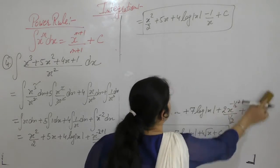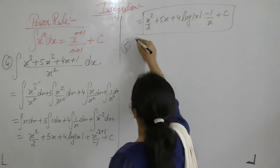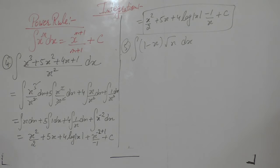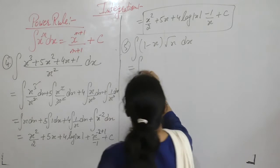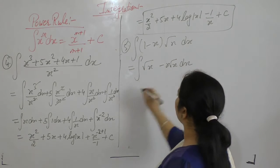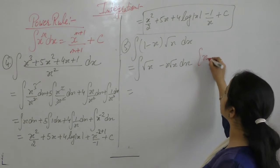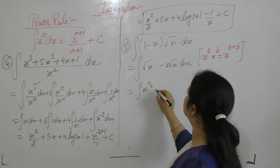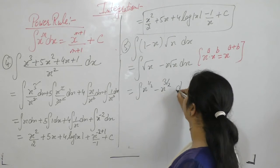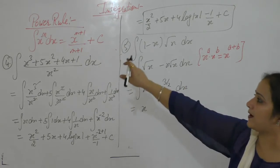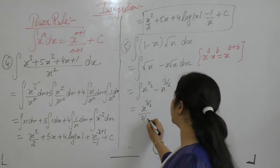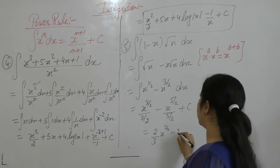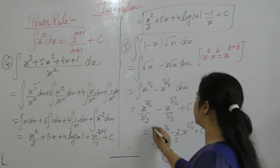Example 5: Integral of (1 - x)√x dx. First multiply √x into each term: 1·√x - x·√x = x^(1/2) - x^(3/2). Applying the power rule: integral of x^(1/2) is x^(3/2) / (3/2) = (2/3)x^(3/2), and integral of x^(3/2) is x^(5/2) / (5/2) = (2/5)x^(5/2). So the answer is (2/3)x^(3/2) - (2/5)x^(5/2) + C.